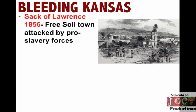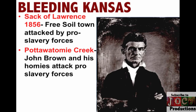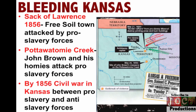Kansas quickly spirals into a civil war known as Bleeding Kansas. Open fighting takes place. There's the Sack of Lawrence in 1856 where pro-slavery forces attack the town of Lawrence, Kansas, killing a couple of people and destroying homes and local businesses. Two days later, John Brown, along with his followers, attacks pro-slavery forces at Pottawatomie Creek. They literally hack to death five alleged pro-slavery people. By 1856, you've got civil war going on in Kansas between pro-slavery and anti-slavery forces with open fighting.